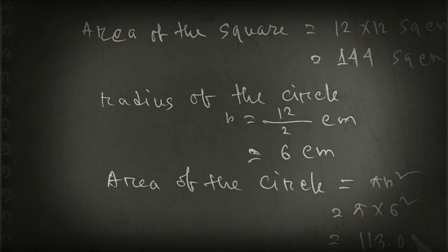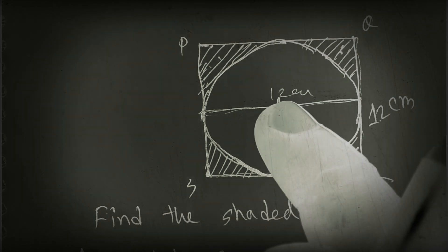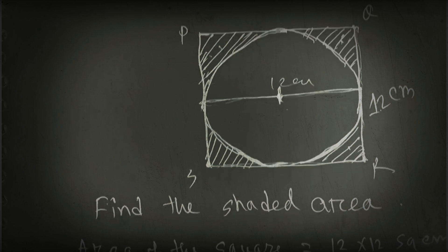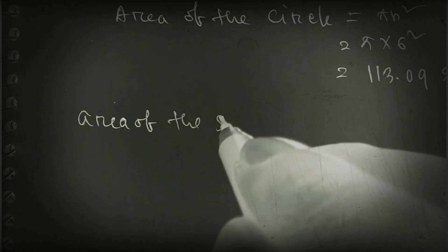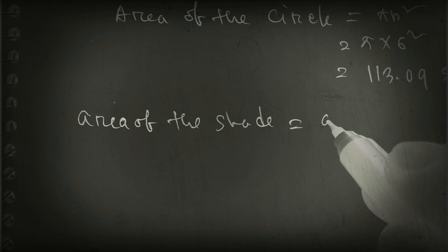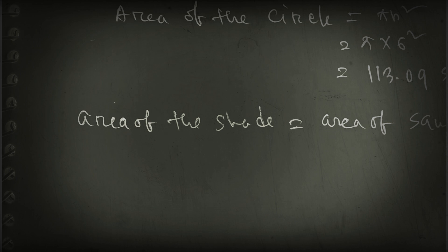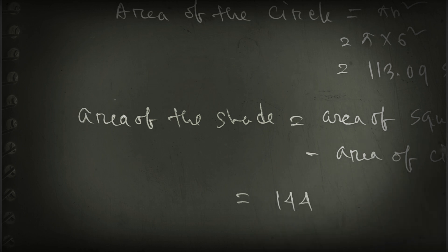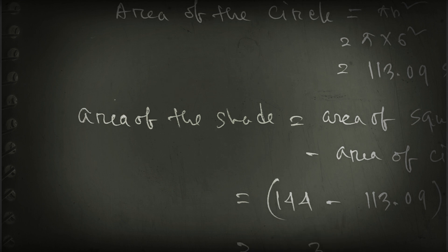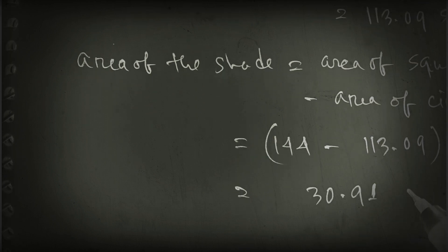Now if we subtract the area of the circle from the area of the square, we can easily find the shaded area. Shaded area equals area of square minus area of circle: 144 minus 113.09 square cm. Subtracting gives us 30.91 square cm.